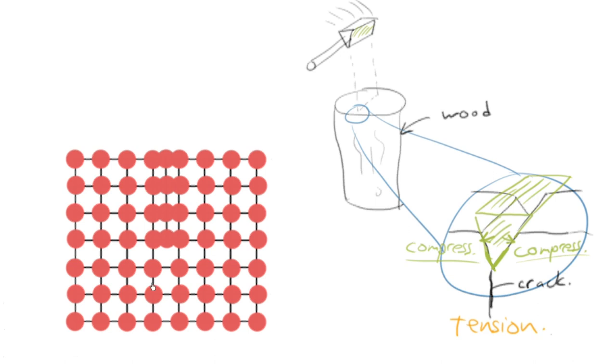And so now if we return to our dislocation, the reason I went through that whole exercise with the axe is I want you to appreciate the residual stresses in the lattice due to this dislocation. So these four atoms here, and they're going in and out of the page, we often refer to it as an extra half plane.